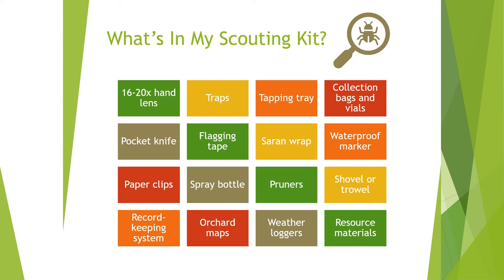For both the pocket knife and pruners, a spray bottle filled with a dilute bleach or alcohol solution is very important. If you are taking samples from a tree, you do not want to use the same piece of equipment on another tree without sanitizing it, because you can transfer diseases. Having that spray bottle to clean any equipment you used on the tree between trees is really critical.